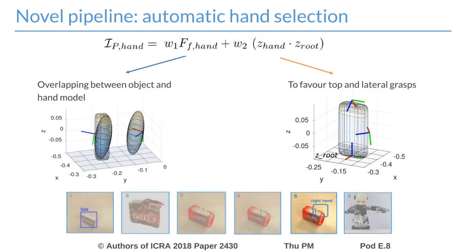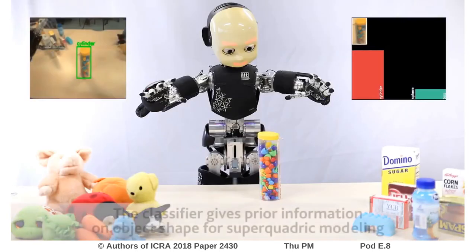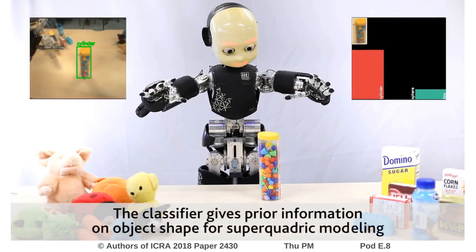Once a grasping pose is computed for the right and for the left hand, we choose the best one according to a pose quality index, taking into account the overlapping between the hand and the object model and some constraints on the orientation. This video shows a demonstration of our pipeline execution.